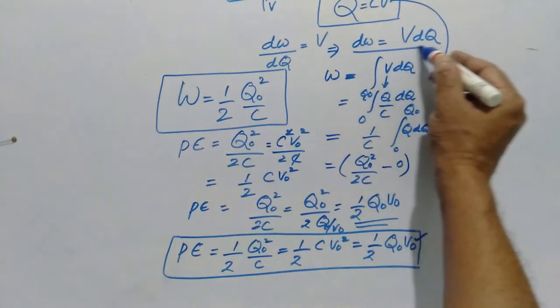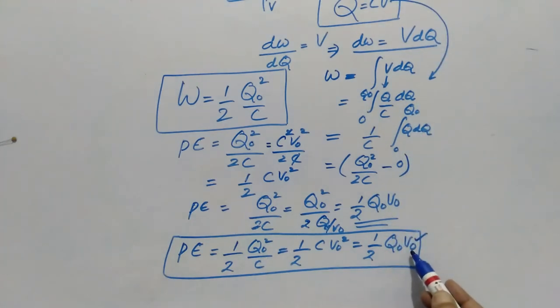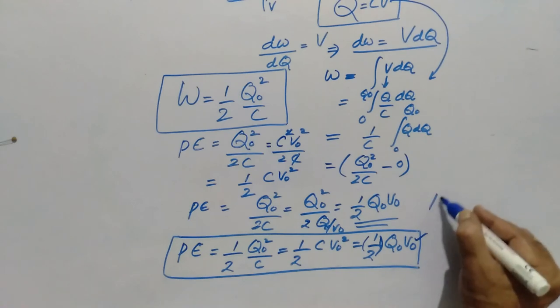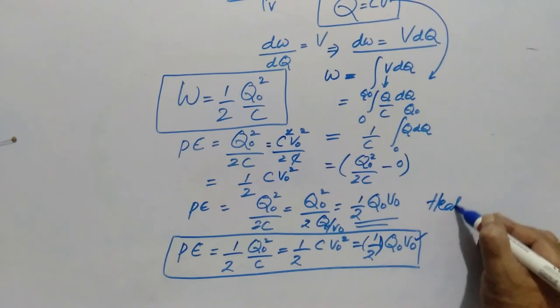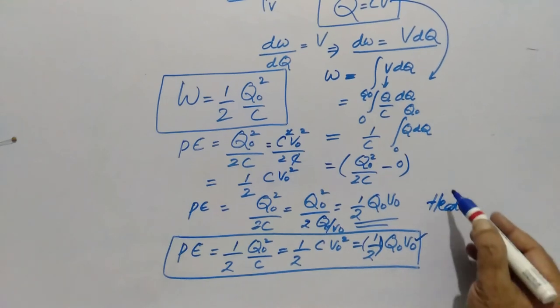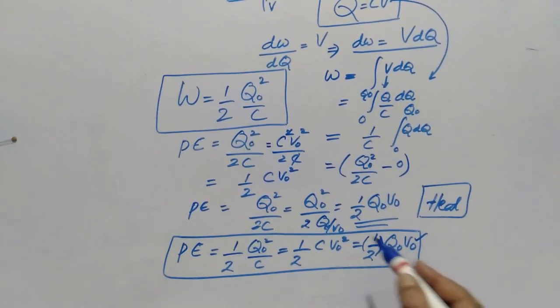If you look at this one, W = V × Q, so Q₀V₀ must equal W. But there is a factor of ½ also existing in the formula. Then it clearly tells us that half of the work done is stored in the form of energy, and the rest half is released in the form of heat. So this is the central idea of the energy stored in a capacitor.